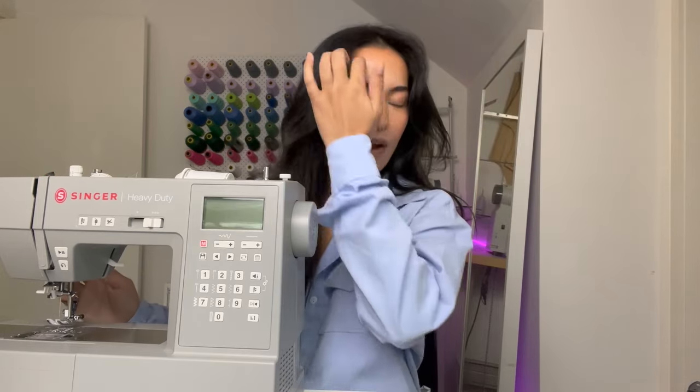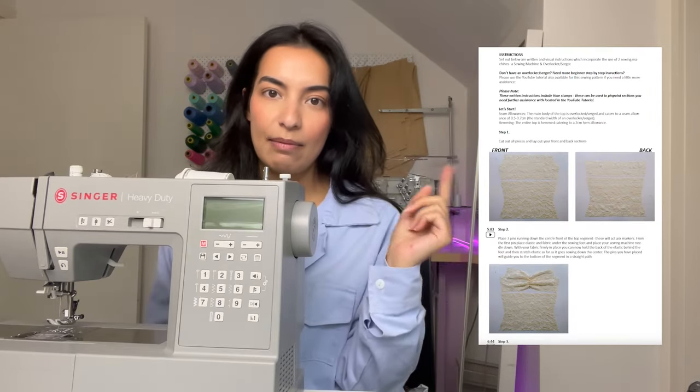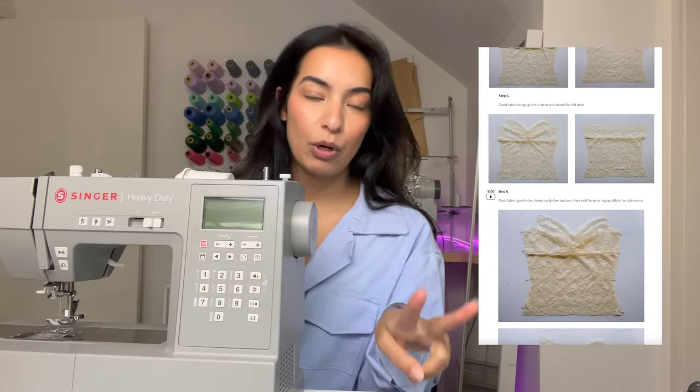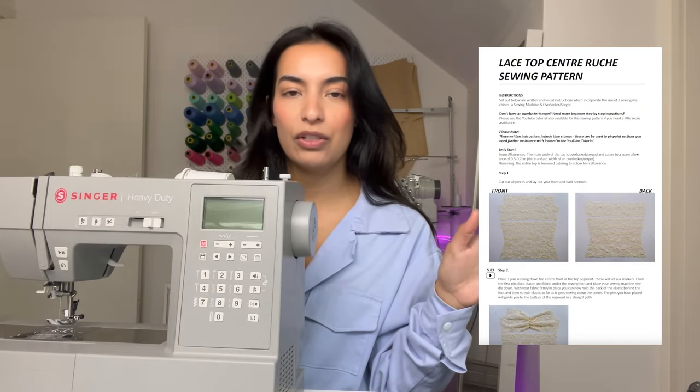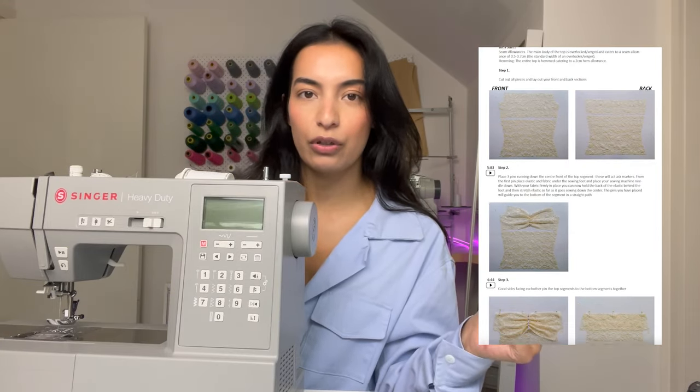If you already know how to sew and you have both sewing machines, which is an overlocker serger and a regular machine, that's absolutely fine. I have step-by-step instructions which employ the use of both machines with visual and written instructions. However, if you're a beginner and you only have access to one,